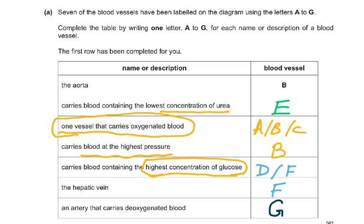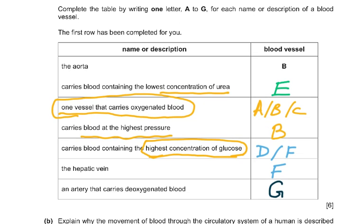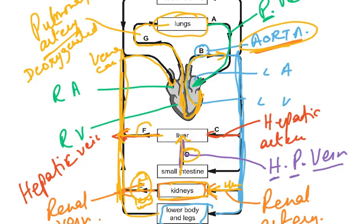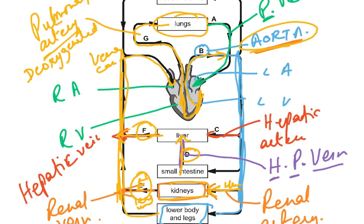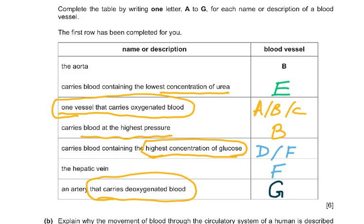The hepatic vein is the vessel leaving the liver, so it must be F. The artery that carries deoxygenated blood is the pulmonary artery (G) — this is the only artery that carries deoxygenated blood, making it the exception to the rule that arteries carry oxygenated blood.